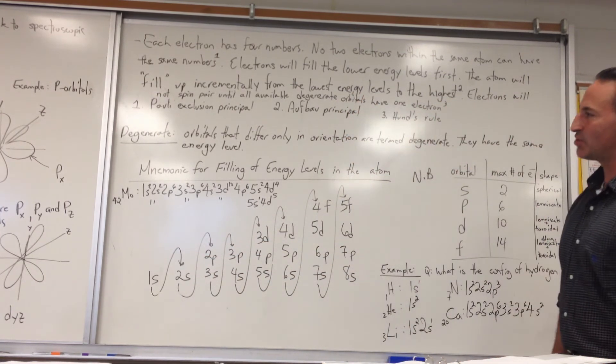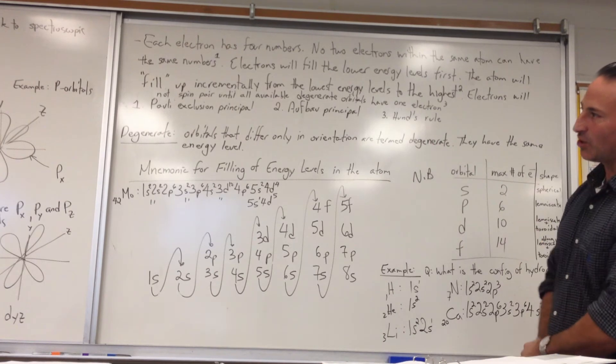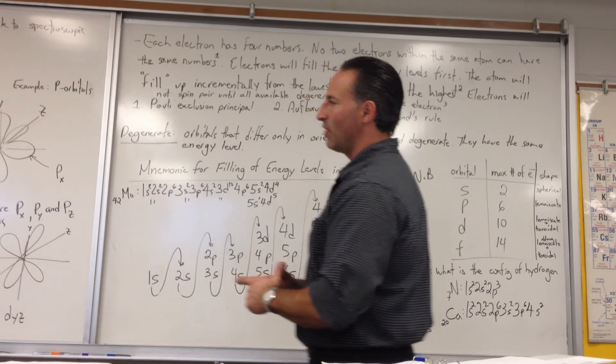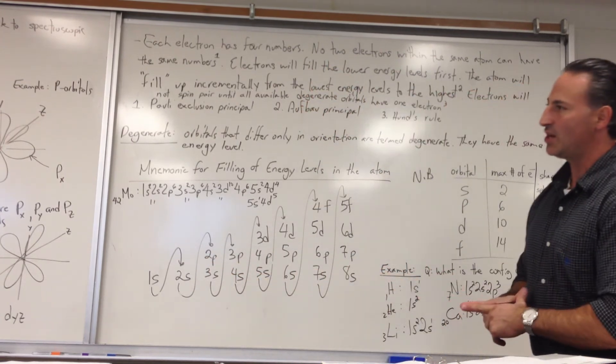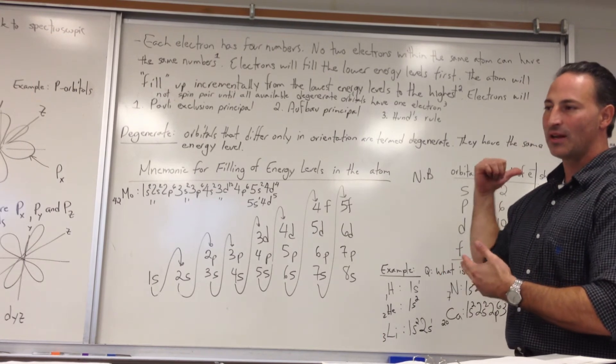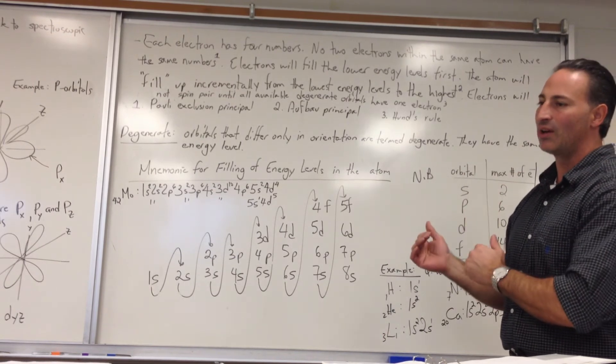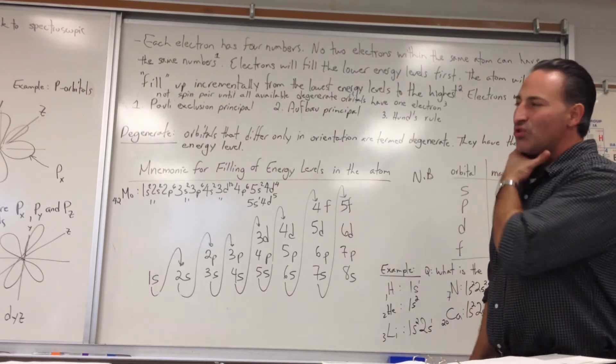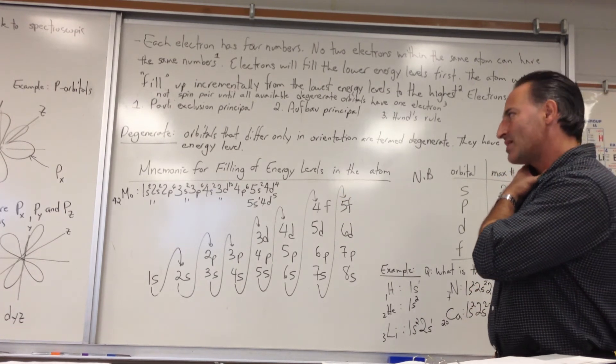You'll see there are tiny exceptions to the rule. I mentioned in the notes early on that there is overlap between 3D and 4S levels. They're about almost the same energy, and there's also overlap between 5S, 4D, and 4F levels. You'll see sometimes that electrons will go into one level instead of the other, and they'll slightly break the pattern.